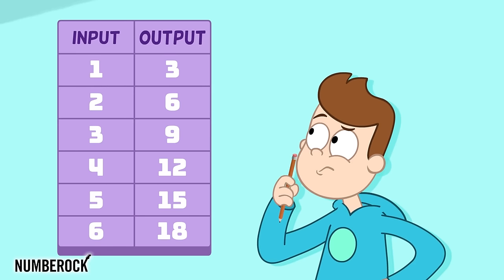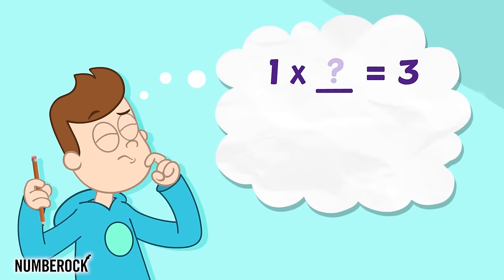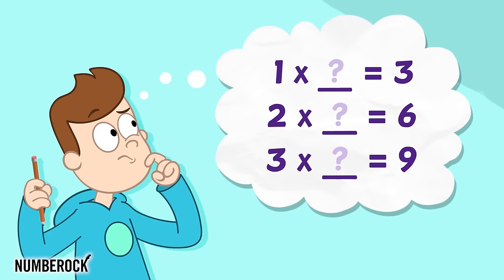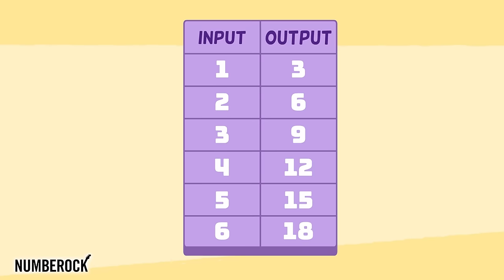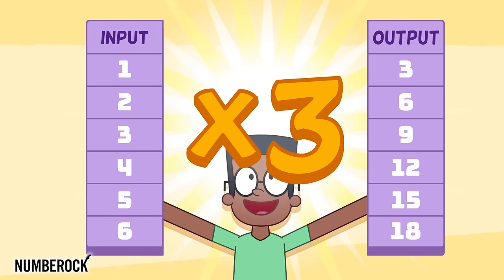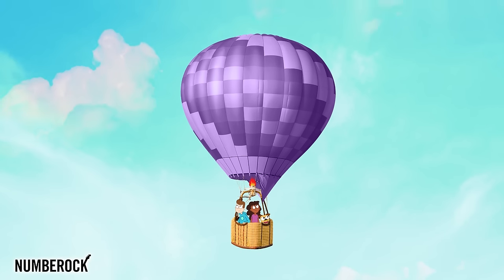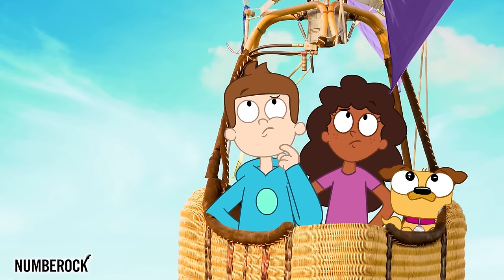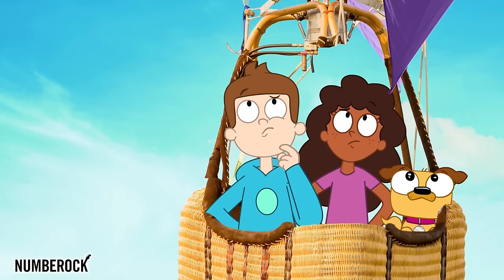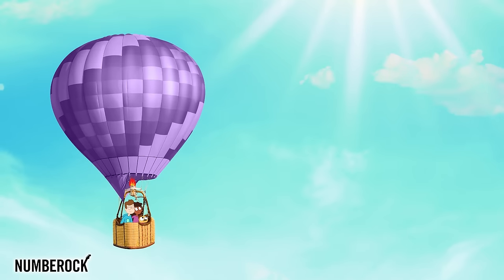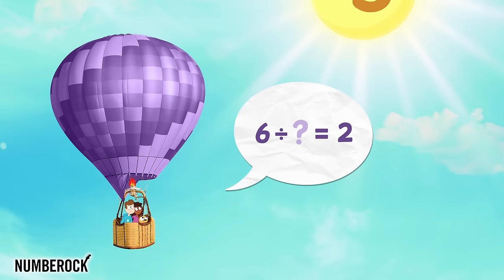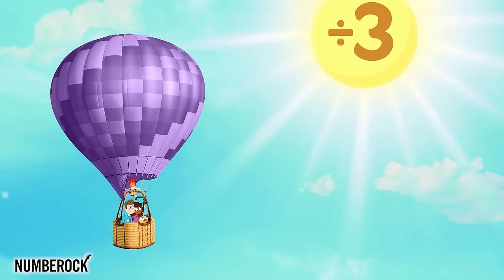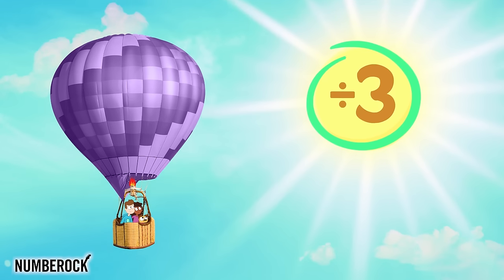We can always find out without any doubt. Take an educated guess and test it out, till you find what the rule is all about. What's happening between the in and the out? We can always find out without any doubt. Take an educated guess and test it out, till you find what the rule is all about.